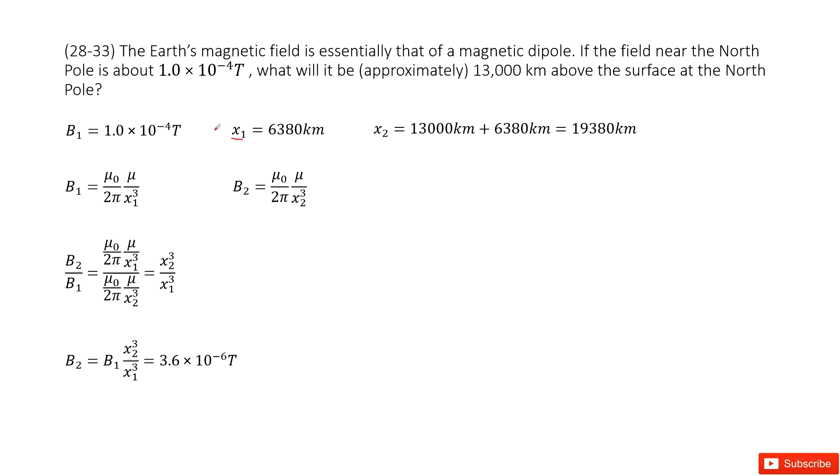So we write it as x1 and we know at this position the magnetic field is B1. At another position x2, that is 13,000 km above the surface of the Earth. So the distance can be written as x2 equals 13,000 km plus this radius of Earth.